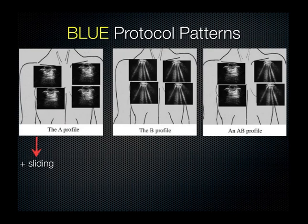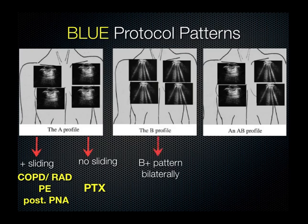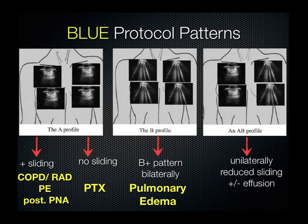Here are some examples. A predominant A profile with A lines on both sides and sliding turned out to be COPD, reactive airway disease, PE, or pneumonia in the posterior fields. Without sliding, pneumothorax was often the diagnosis. For predominance of B lines bilaterally, the common outcome was pulmonary edema. An AB profile — B lines on one side and A lines on the other, or unilateral predominance with reduced sliding and an effusion — indicated pneumonia.